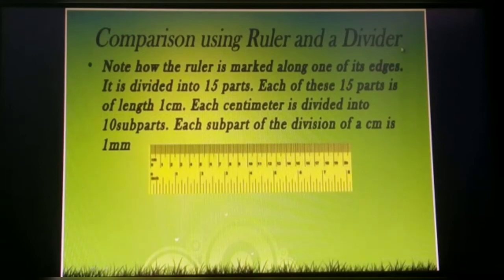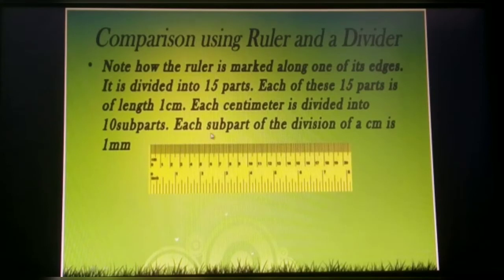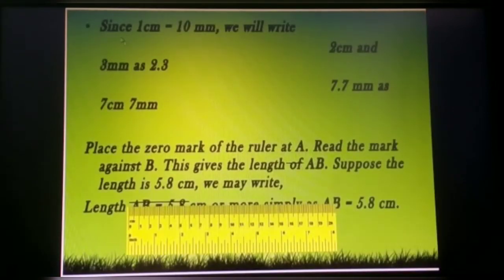Now comparison using ruler and divider. When you compare the line, you will be using a ruler or divider. A ruler is marked along one of its edges and is divided into 15 parts. Each of these 15 parts has a length of 1 centimeter. Each centimeter is divided into 10 subparts. Each subpart subdivision of a centimeter is 1 millimeter. Since 1 cm equals 10 mm, we write 2 cm and 3 mm as 2.3 cm, and 7 cm and 7 mm as 7.7 cm.